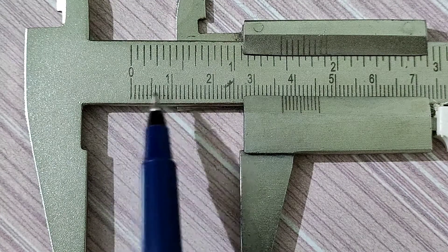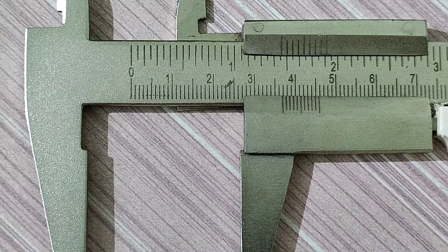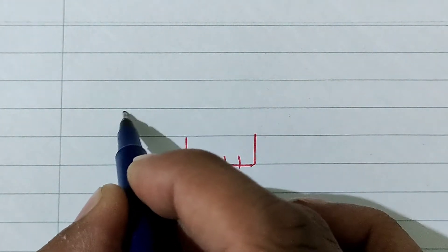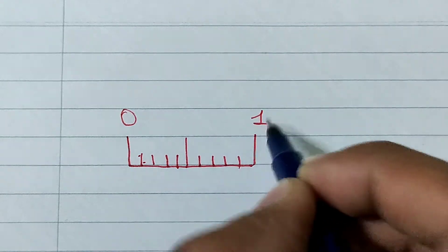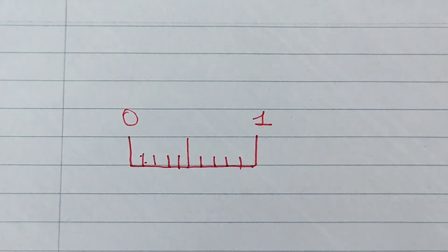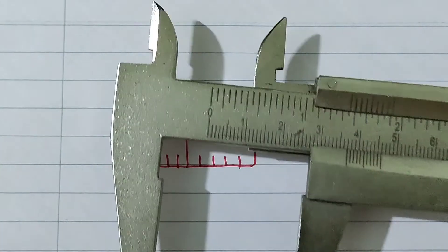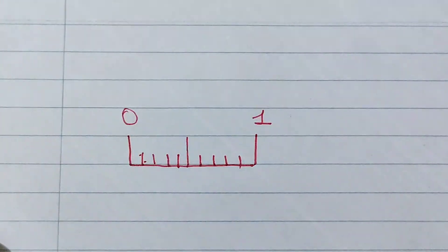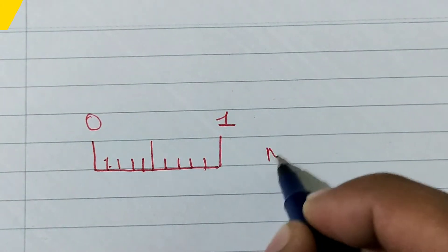Here, from 0 to 1 there are a total of 10 divisions between them. This is the same as we have shown — from 0 to 1. This one is your main scale.